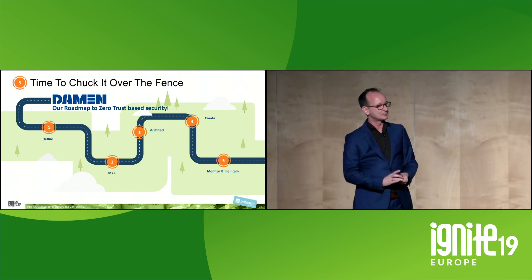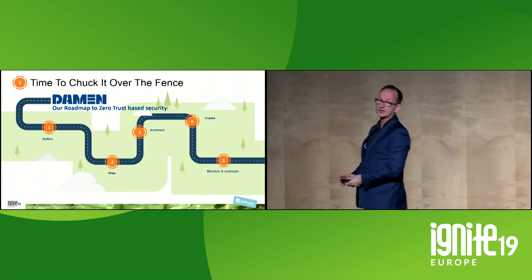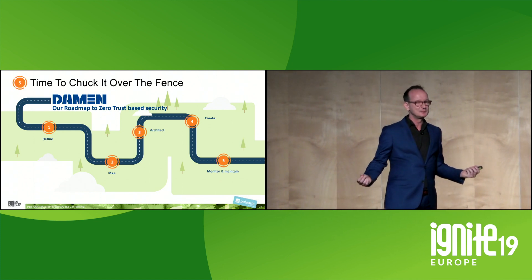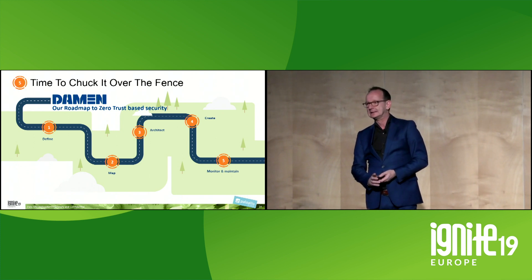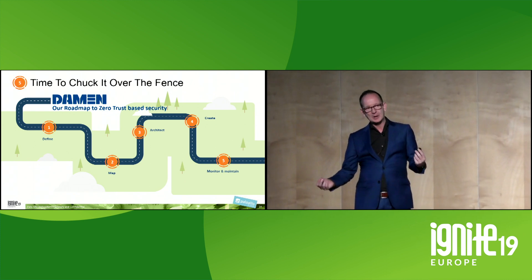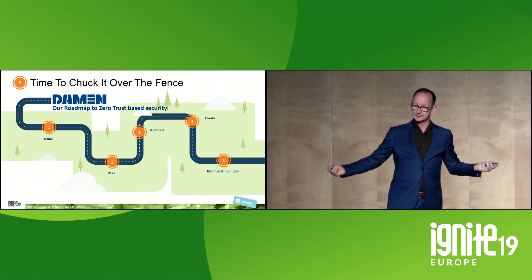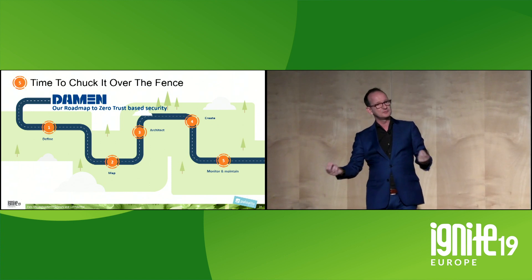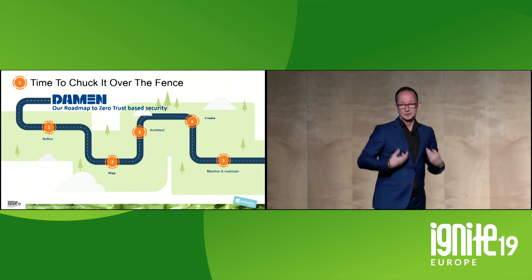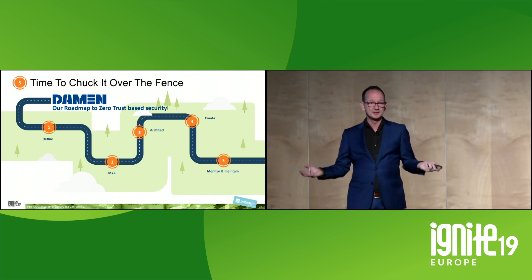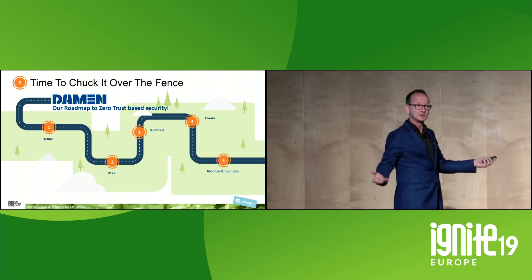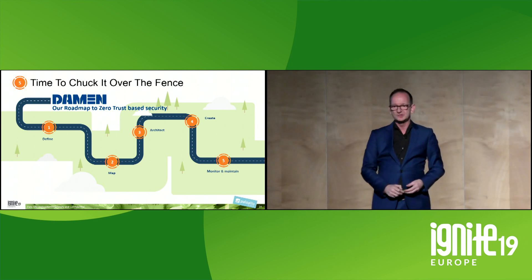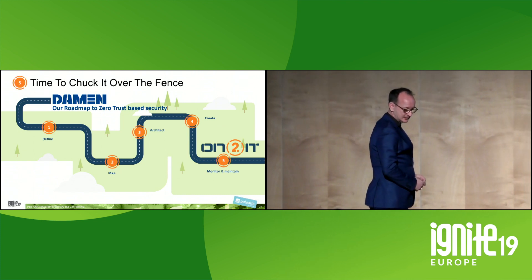Then we came to the last of the five steps to implement Zero Trust: monitor and maintain — or as I like to call it, chuck it over the fence. Having partnered with a security partner who has been with us for a very long time, who has actually taught us how to improve and get more mature, and how to utilize my very scarce resources — because we're a shipbuilding company, not a SaaS or IT company. I can't pay the same or attract the same talent. So without our partners, it's mission impossible. That's where Ontuit stepped in.